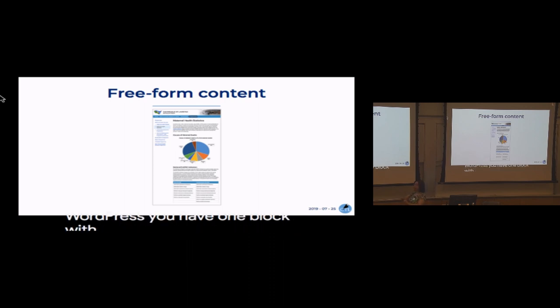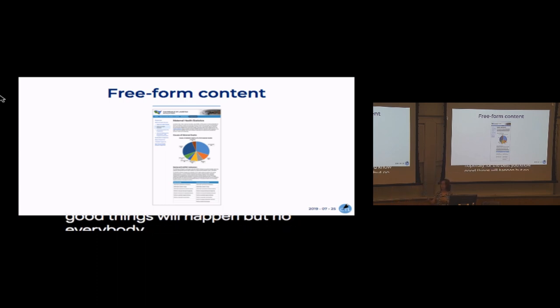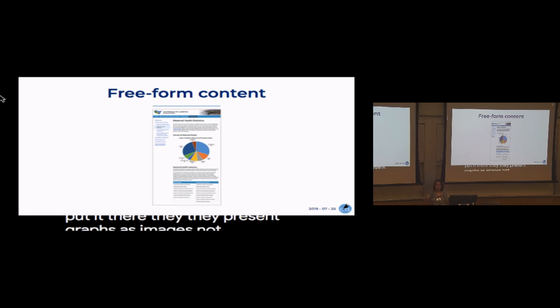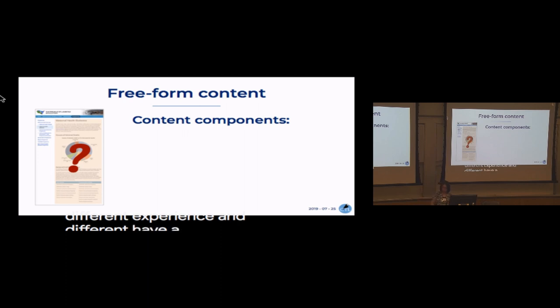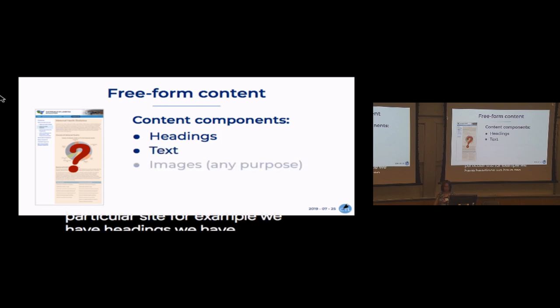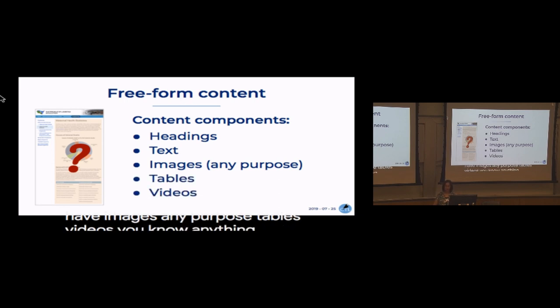With WordPress you have one block — put content here — and then you hope for the best. But everybody has a different experience with how they put content in. They cut and paste, they grab images from the web, they present graphs as images rather than actual graphs. How do you solve this problem when you have so many different people with different experience and style of putting content in? You can end up with headings, text, images, tables, videos — anything at all.